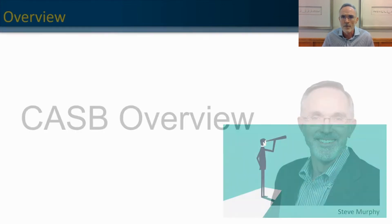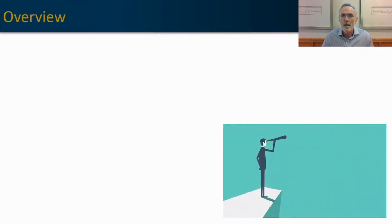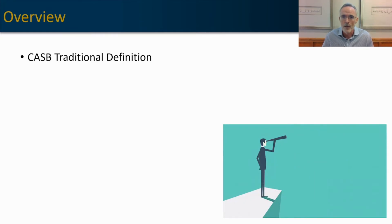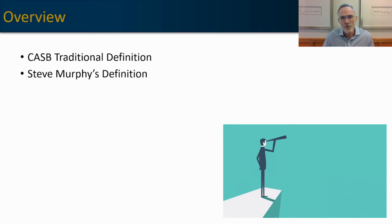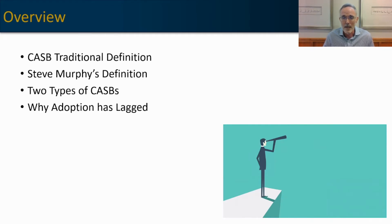Quick outline of our conversation today. We're going to explore what a CASB is — there's a traditional definition and then there's my definition, so we'll look at both. We'll look at two different deployment models for a CASB and evaluate some of the pros and cons, and then we'll talk about why adoption of CASBs has lagged and what's changed to increase the level of adoption and the level of conversations we're seeing in the marketplace.